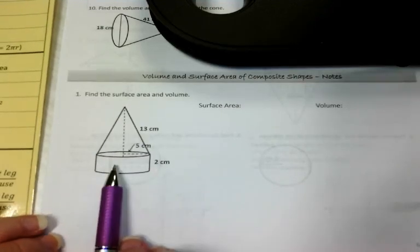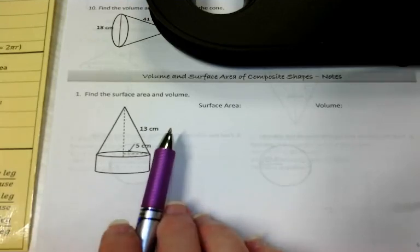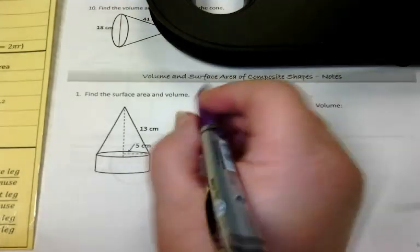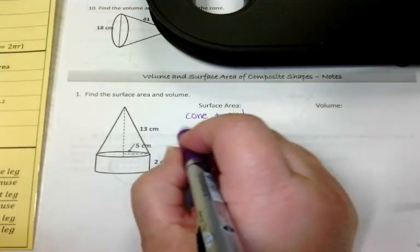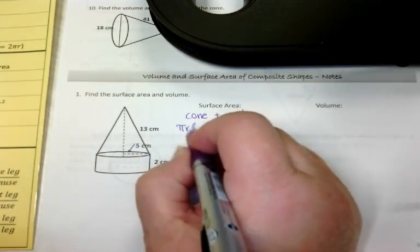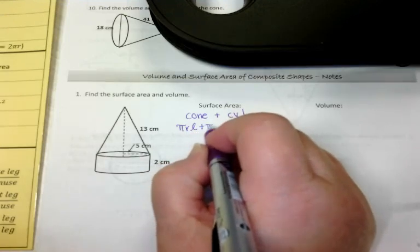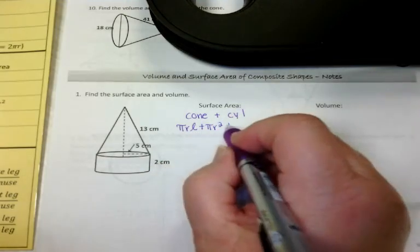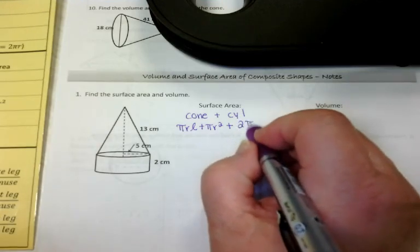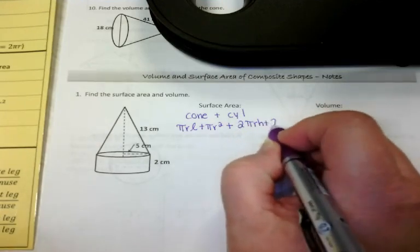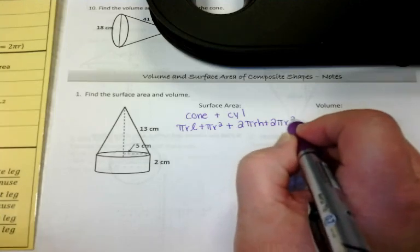We're going to start with this one, the cone and the cylinder. So the surface area of a cone, I'm going to write down cone plus cylinder. The surface area of a cone is pi rL plus pi r squared. The surface area of a cylinder is 2 pi rH plus 2 pi r squared.